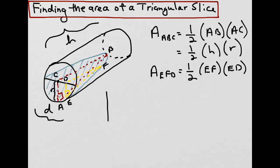Let's draw these triangles. We'll have the big triangle here, ABC, and the little triangle here, EFD. And we know that AC is the radius of the cylinder, and AB is the height of the cylinder.